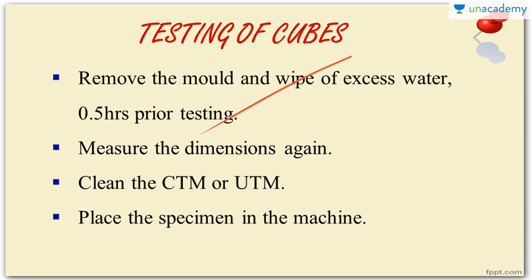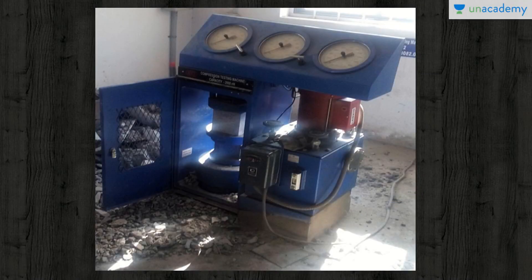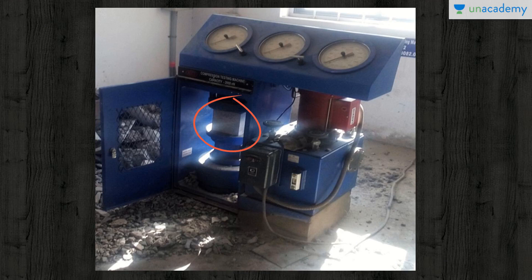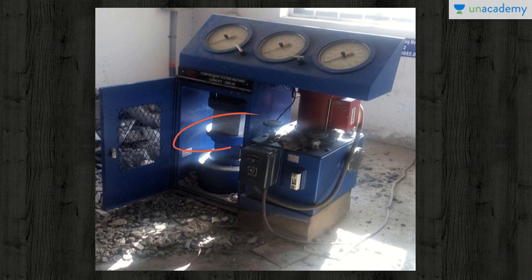Keep the cube outside and allow it to dry to room temperature. During this time, clean the CTM or UTM — especially the loading area — so there are no aggregate particles from the previous test. After cleaning, place the specimen in the machine centrally, meaning it should be in the middle of both loading plates so the load becomes uniformly distributed. Both loading plates are kept in contact with the specimen.